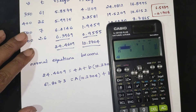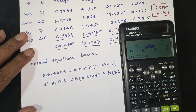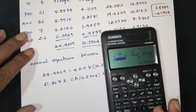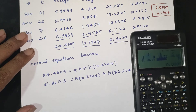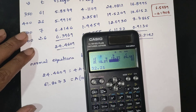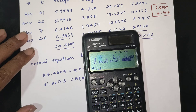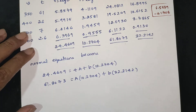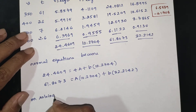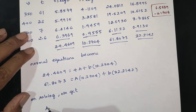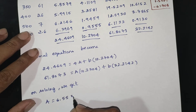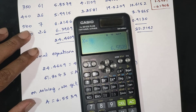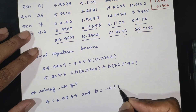Evaluating the equations with values 4, 10.2704, 24.4609, 10.2704, 32.1825, 32.2142, 61.8073. On solving we get: capital A is equal to 6.5539 and small b is equal to minus 0.1749.